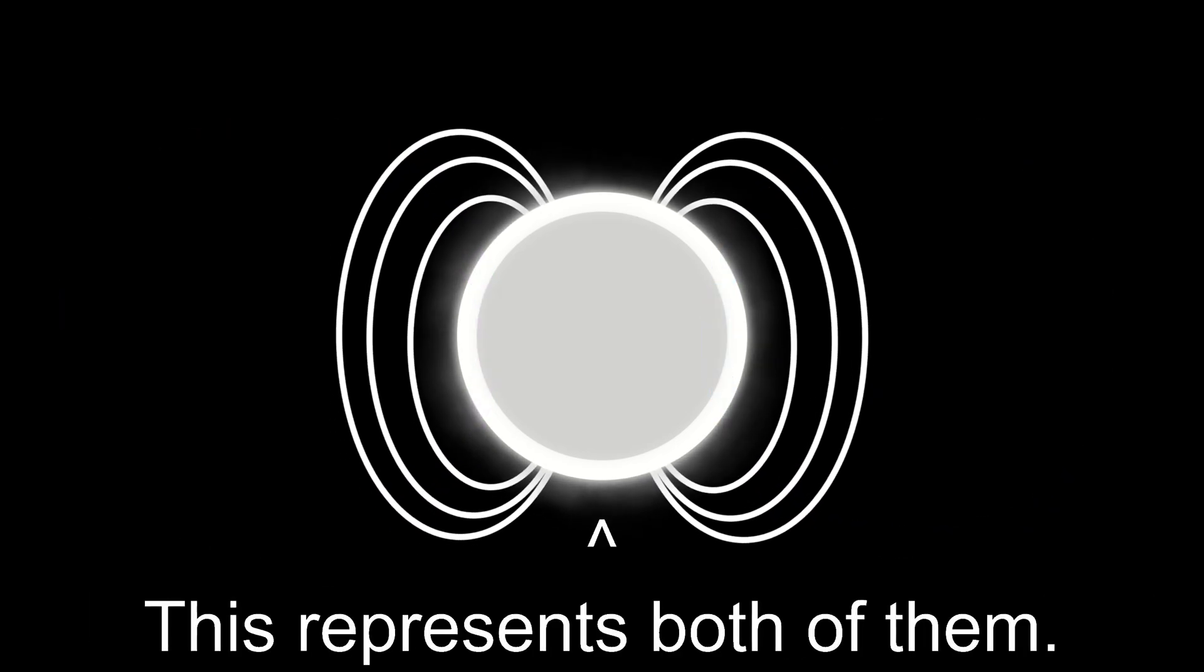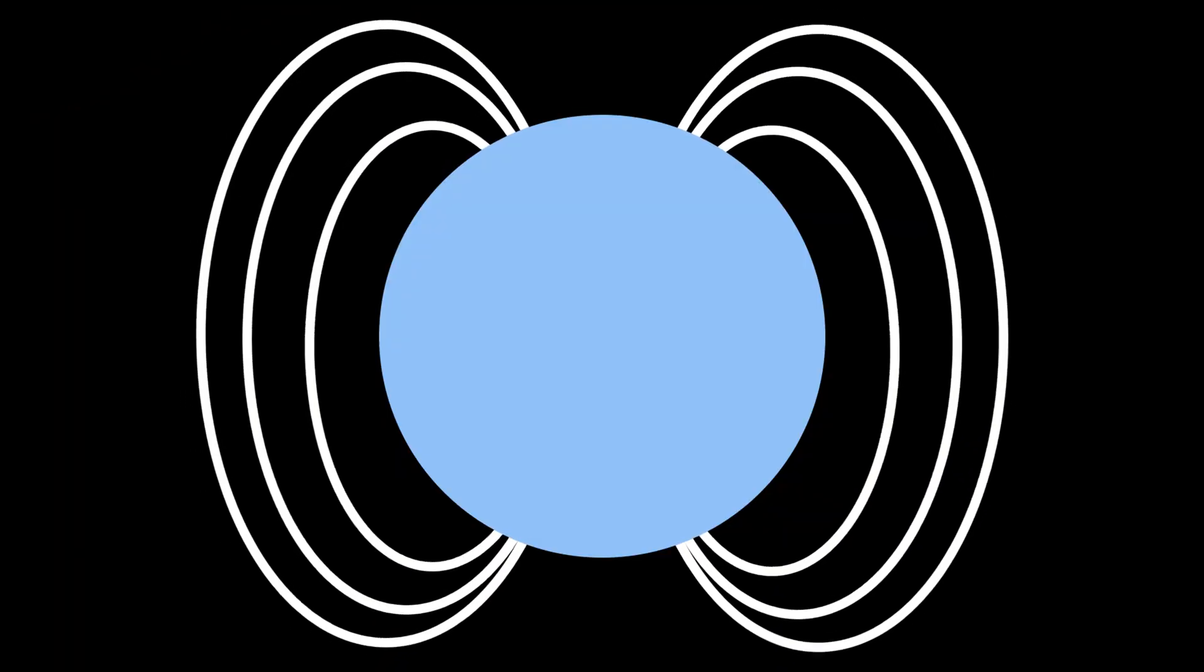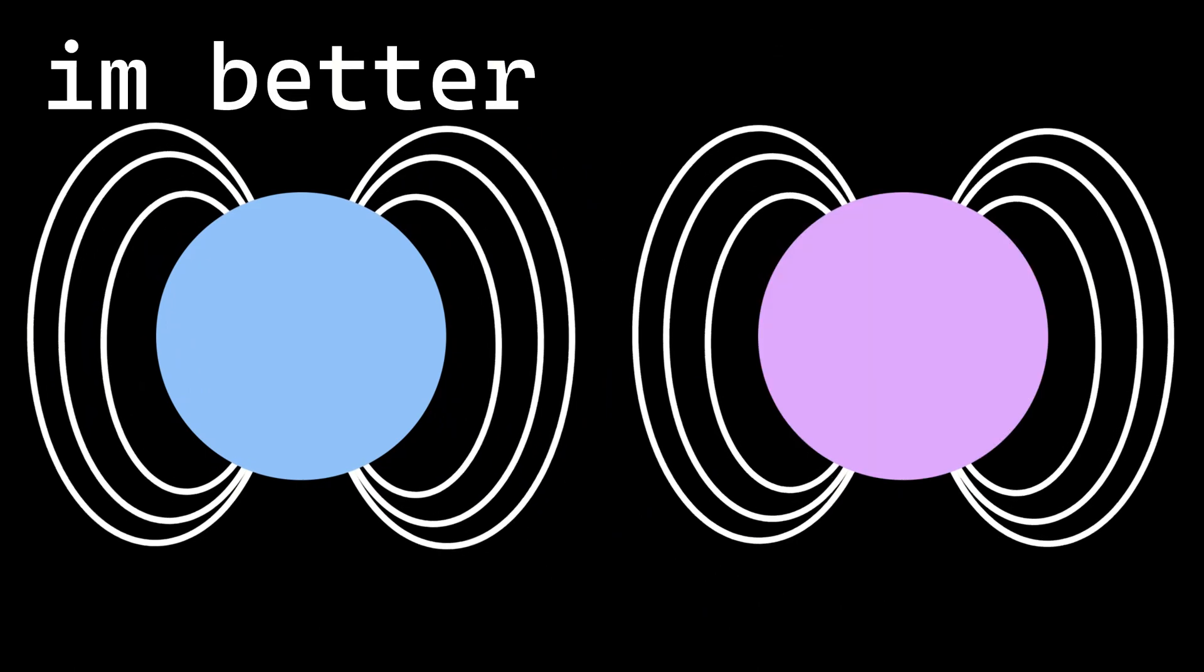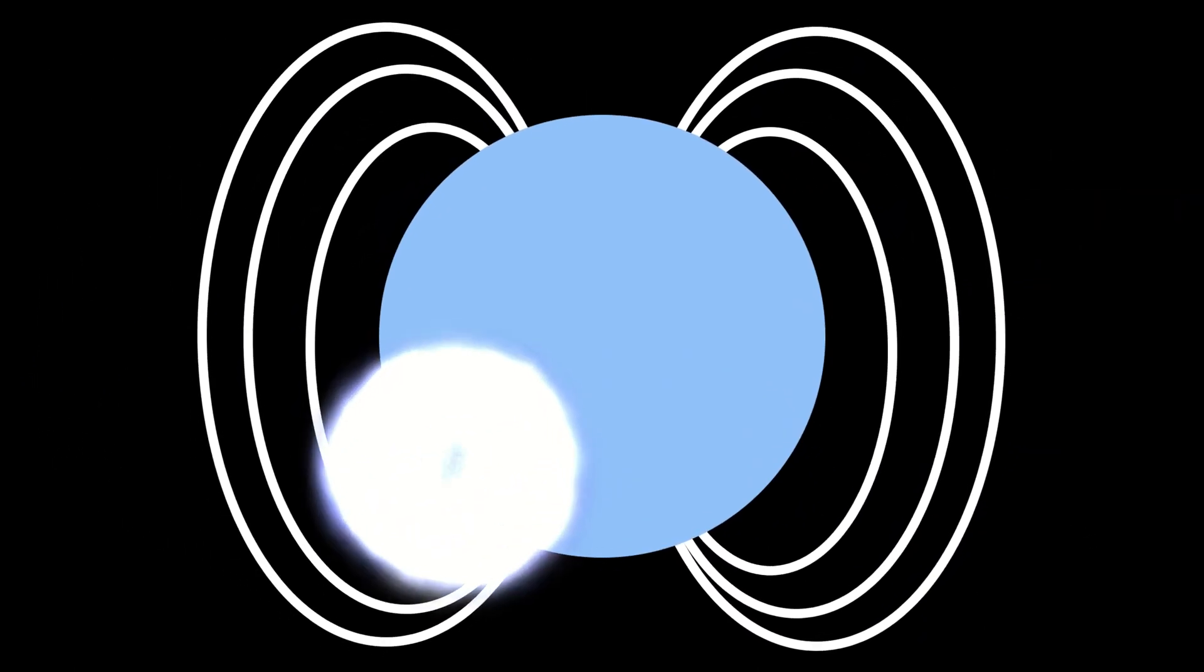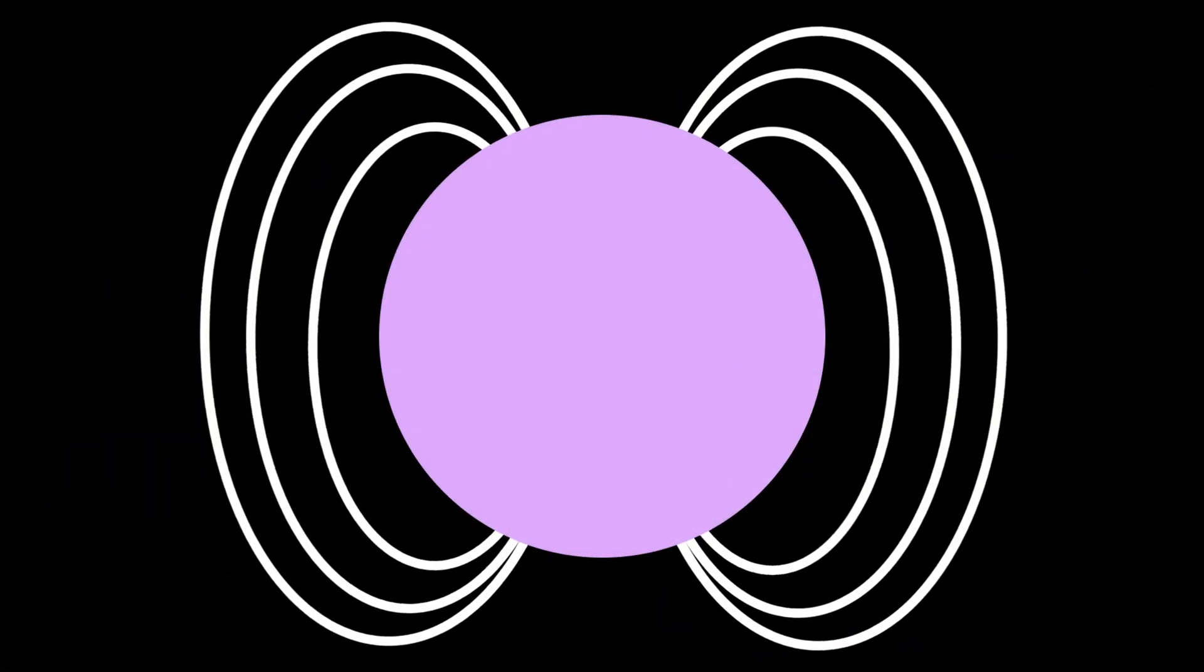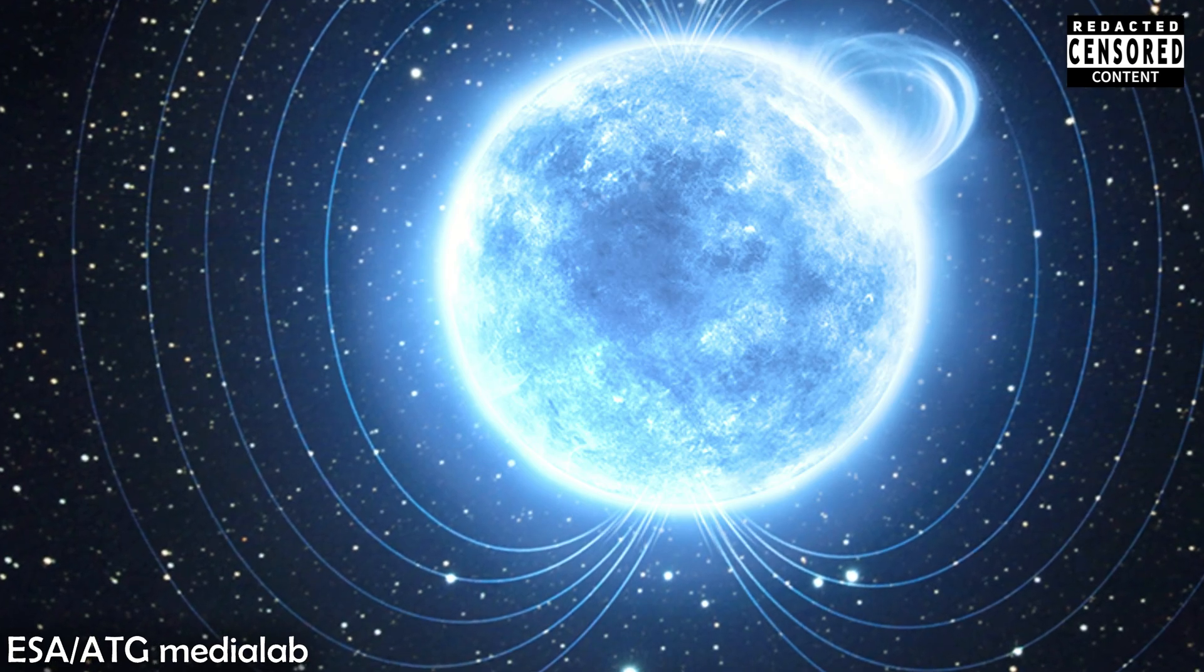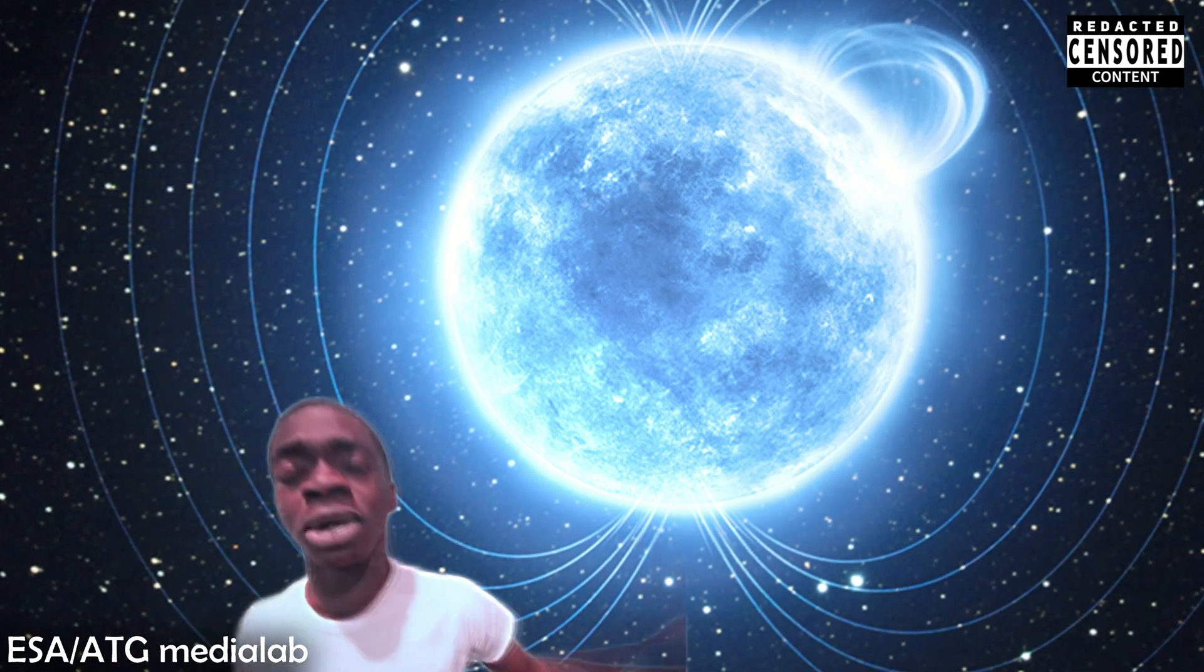For both the pulsar and the magnetar, the explosion in the crust will cause the magnetic field to fluctuate and release energy, just like how a starquake on the sun will cause solar flares. But because the magnetar's magnetic field is so much more powerful than the pulsar's, the energy released by its fluctuation will be much greater than the energy released by that of a pulsar's magnetic field. If you somehow got close to one, its magnetic field would rip you apart on the atomic level.